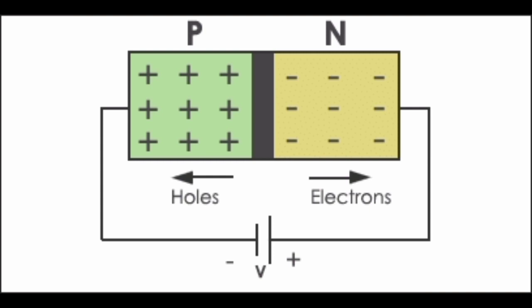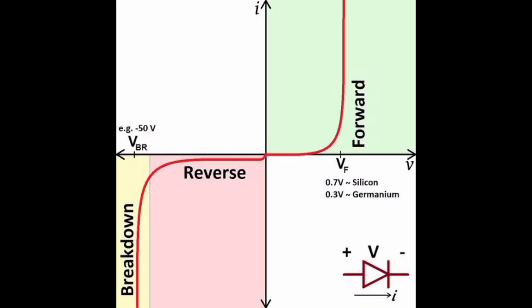In reverse bias, the positive of the battery is connected to the negative of the diode, and the negative terminal of the battery is connected to the positive of the diode. This is the VI characteristics of the diode.